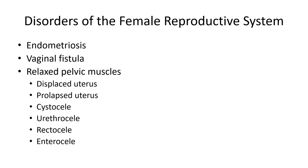A prolapsed uterus is considered mild if the cervix drops to the lower vaginal segment, moderate when the cervix is visible at the vaginal opening, and severe (procedentia) when the entire cervix and uterus protrude from the vaginal opening. Contributing factors include obstetric trauma, overstretching of uterine muscles, multiple births, coughing, straining, aging, a history of heavy lifting, and estrogen loss due to menopause.